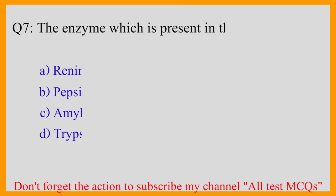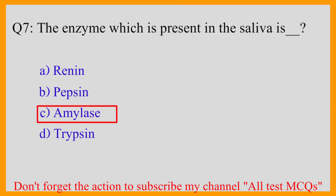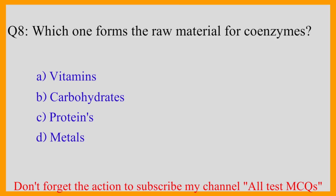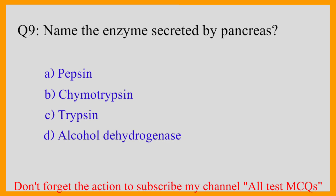Question number seven: The enzyme which is present in the saliva — the correct answer is option C — amylase. Question number eight: Which one forms the raw material for coenzymes? The correct answer is option A — vitamins. Question number nine: Name the enzyme secreted by the pancreas — the correct answer is option C — trypsin.